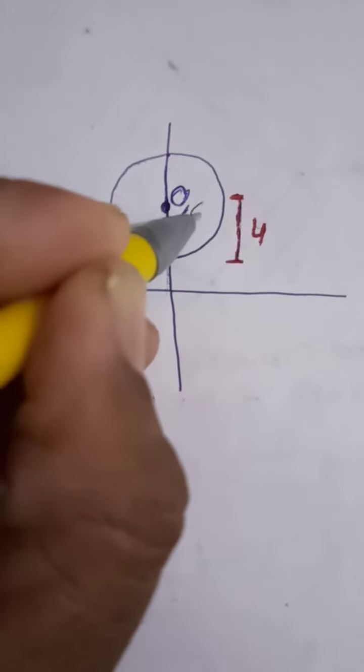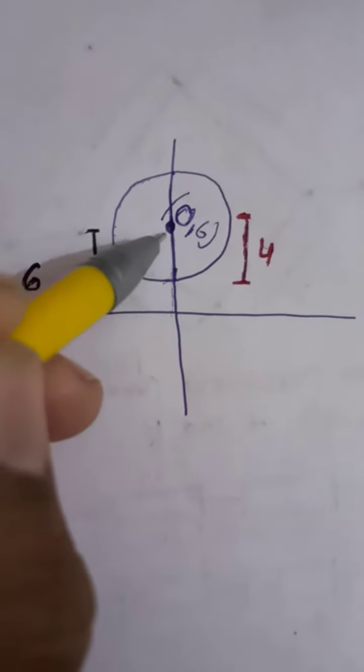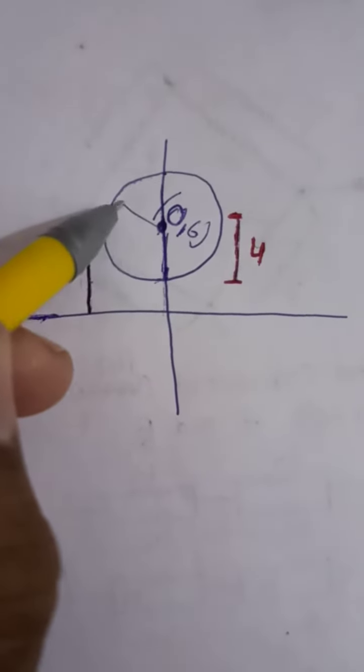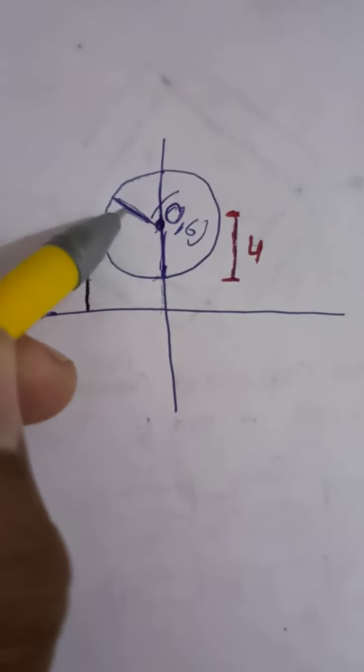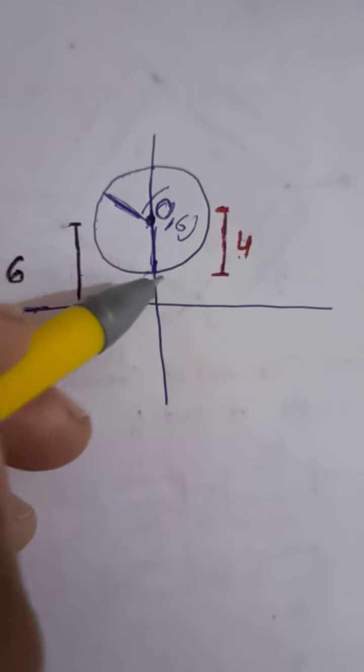So you have the center coordinates, and now you know that this is the radius which length is already given - it's four. Now we have to find the equation of such a circle.